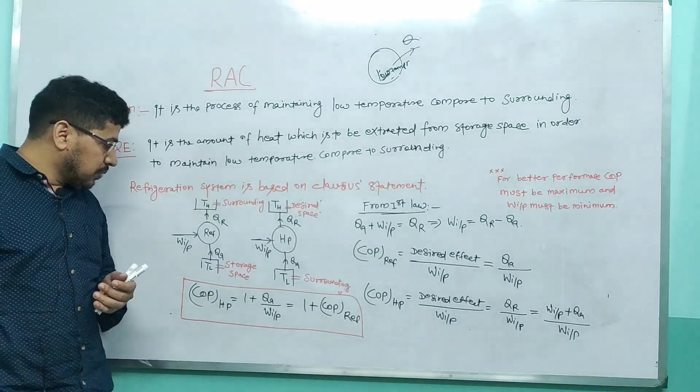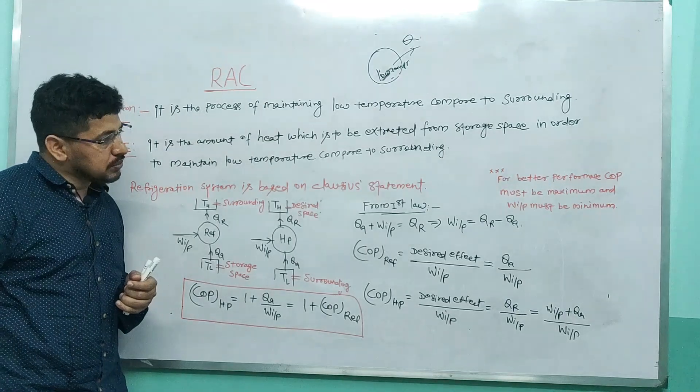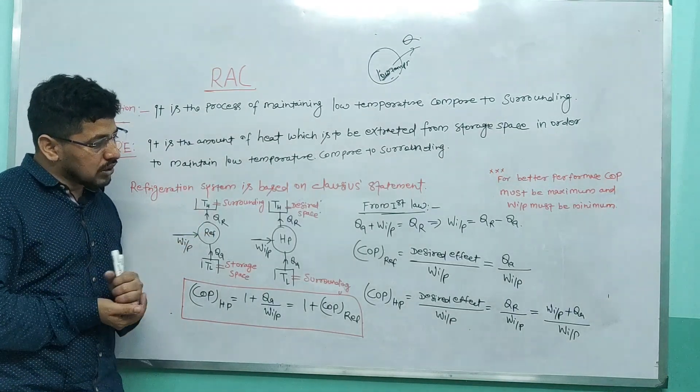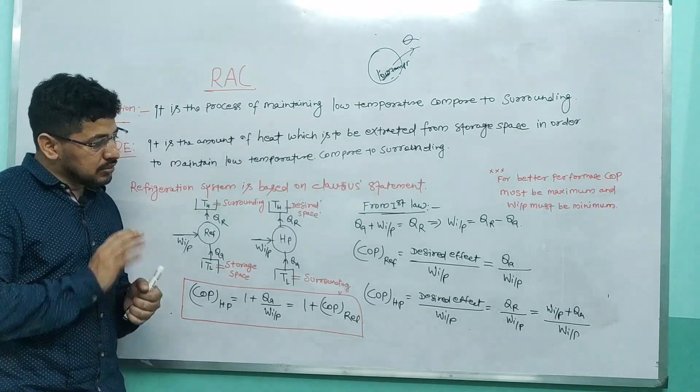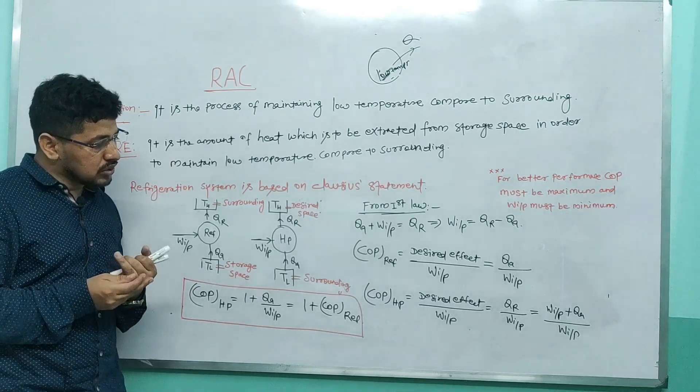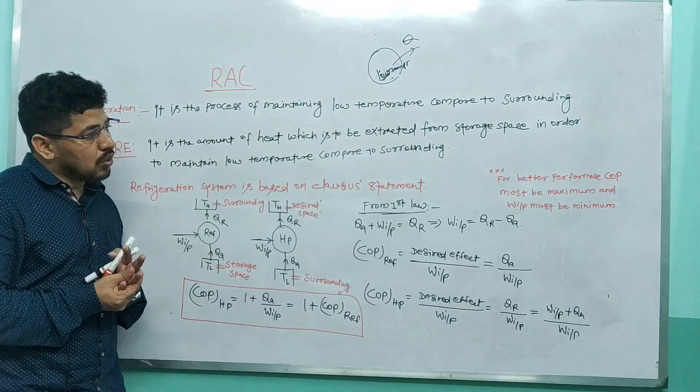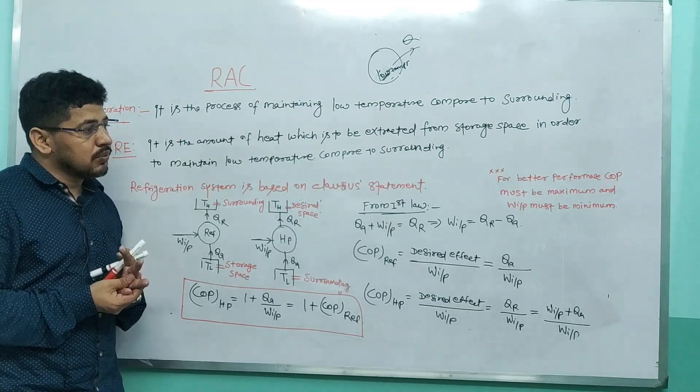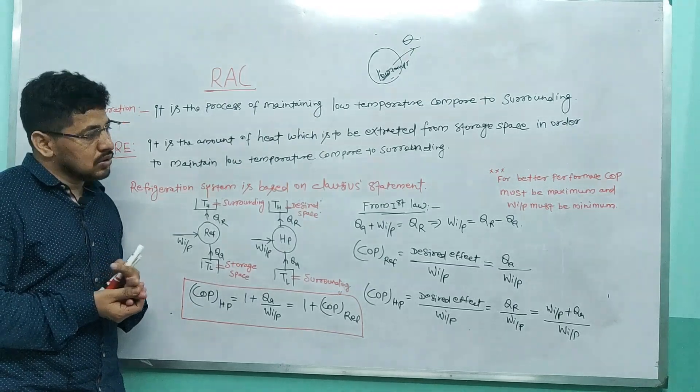The relation is COP of heat pump equals 1 plus COP of refrigerator. For better system performance, the COP must be maximum and the work input must be minimum.